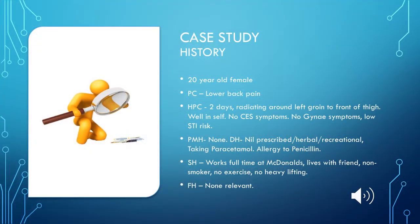This case study is about a 20-year-old female who presents to the urgent care centre with two days of lower back pain. It's an aching pain that's constant to both sides of her lower back, which radiates around her left groin to the front of her left thigh when she's in certain positions.